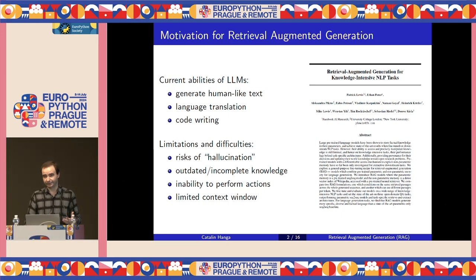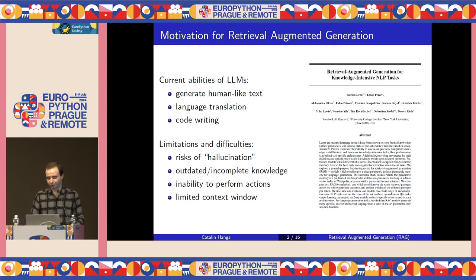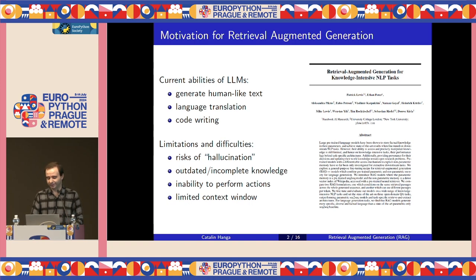However, despite all these impressive abilities, we also know that LLMs suffer from some important limitations. The most well-known issue is that of hallucinations, which is when a model gives an answer which is totally incorrect but in a very confident and convincing way. Another common problem is outdated or incomplete knowledge. This happens because LLMs were trained on data collected up to a certain point in the past, so they don't have any knowledge about more recent events beyond that point.